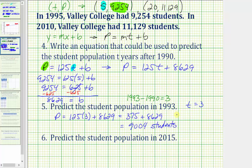And then finally for our last question, we're asked to predict the population in 2015. Notice 2015 is 25 years after 1990, so we need to find the value of p when t equals 25. We can also find 25 by taking 2015 and subtracting 1990. So we'd have p equals 125 times 25 plus 8629, which equals 3,125 plus 8629, which equals 11,754 students.